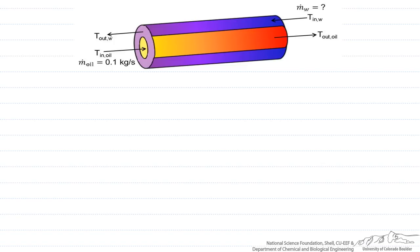So our governing equation is going to be that the heat transfer rate, or Q dot, is equal to the mass flow rate of the fluid times the heat capacity of the fluid times the change in temperature.